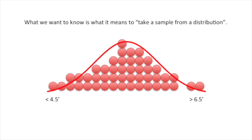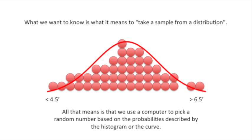What we want to know today is what it means to take a sample from a distribution. All that means is that we use a computer to pick a random number based on the probabilities described by the histogram or the curve.